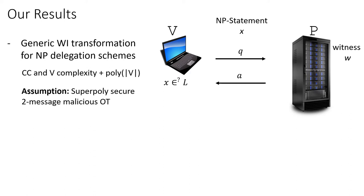In terms of assumptions, we require a super-polynomially secure two-message maliciously secure oblivious transfer. In addition, we require that the original delegation scheme is also super-polynomially sound. We will see where this comes in when we talk about the details of our transformation.